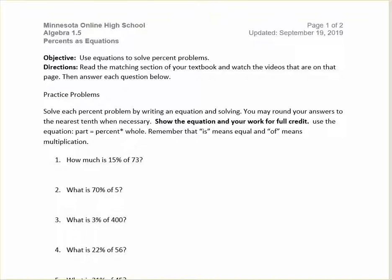Now we're going to write equations. After you learn both methods, then from then on, you can use whichever method you prefer. So we are going to use this equation right here: part equals percent times the whole. When you're reading the problems below, is tells us to use an equal sign, and of tells us to use multiplication, so a dot or parentheses for multiplication.